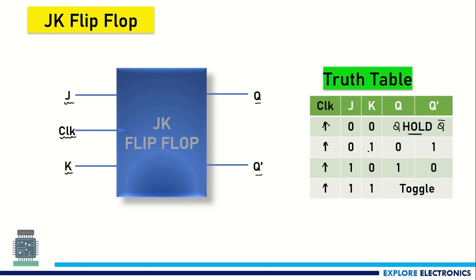When J is 0 and K is 1, Q will be 0 and Q-bar is 1. Similarly, when J is 1 and K is 0, output Q will be set to 1 and Q-bar will be set to 0.